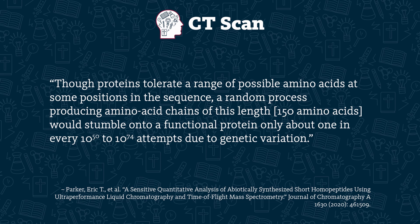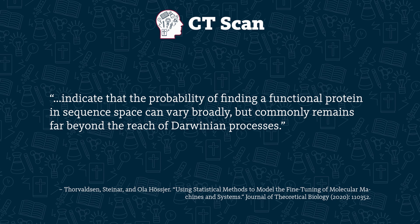And even if you could get such a long amino acid chain to stably bond, they'd need to be ordered in a functional sequence, which is step four. The amino acid sequence helps determine the final protein's form and therefore function. A 2020 article in the Journal of Theoretical Biology summarized studies which examined the chance probability of forming functional protein domains 150 amino acids long, finding that a random process would stumble onto a functional protein only about 1 in every 10 to the power of 50 to 10 to the power of 74 attempts. That number is a 1 followed by 74 zeros — for scale, the estimated number of atoms in the universe is 1 followed by 80 zeros. The article explains that such experiments indicate the probability of finding a functional protein in sequence space commonly remains far beyond the reach of Darwinian processes.